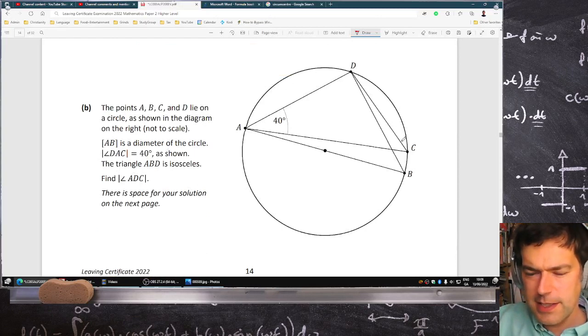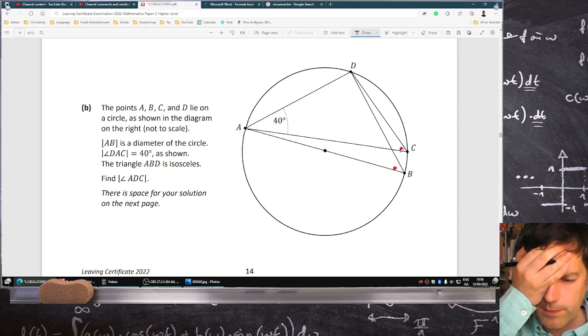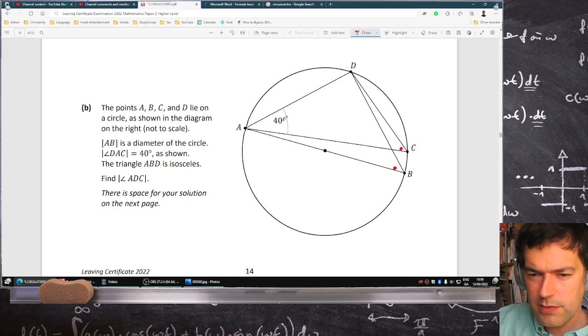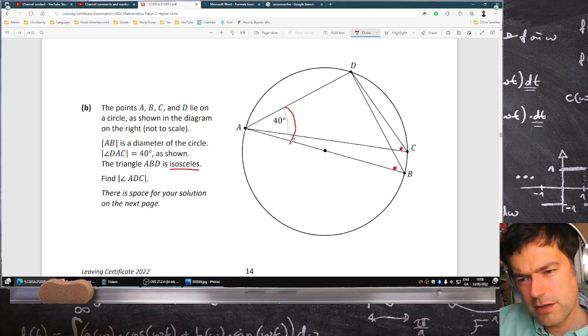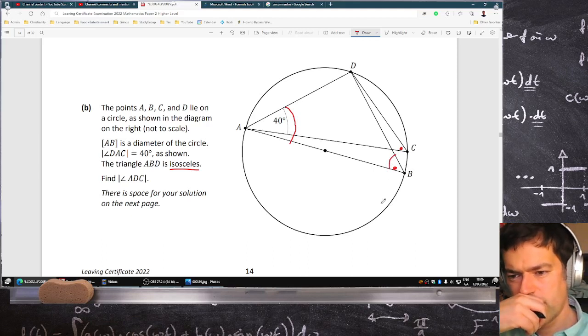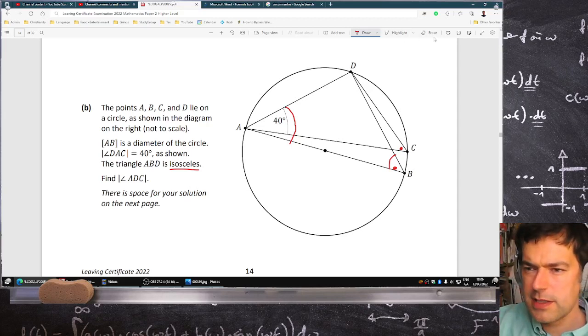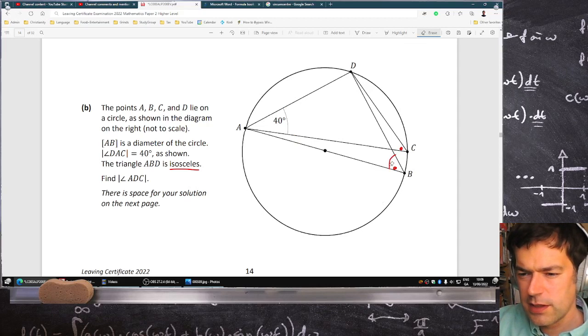So here we're looking for the angle ADC. Just as a point, these angles are the same here—that's a junior sort of theorem. We also know we're told that the triangle is isosceles, meaning that this angle here, I think they're trying to say, is the same as this angle. That's what they're saying here.